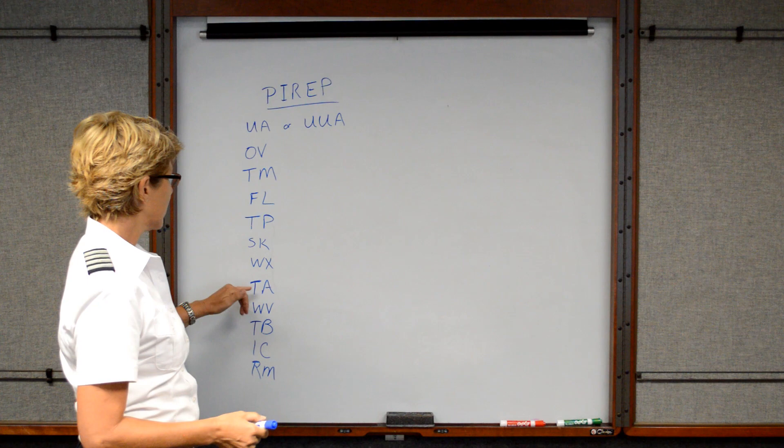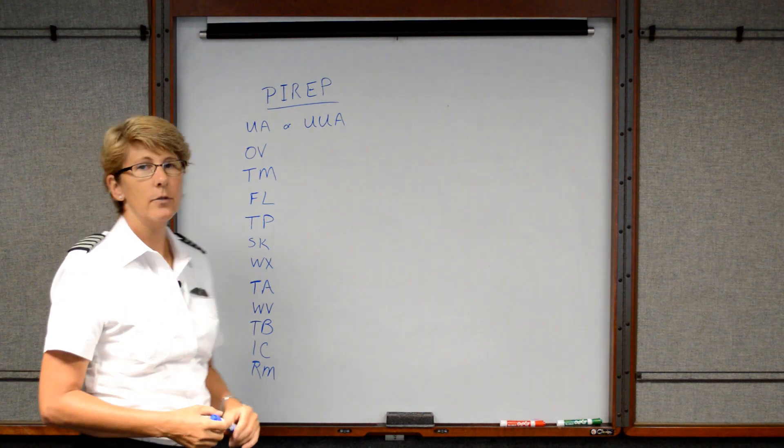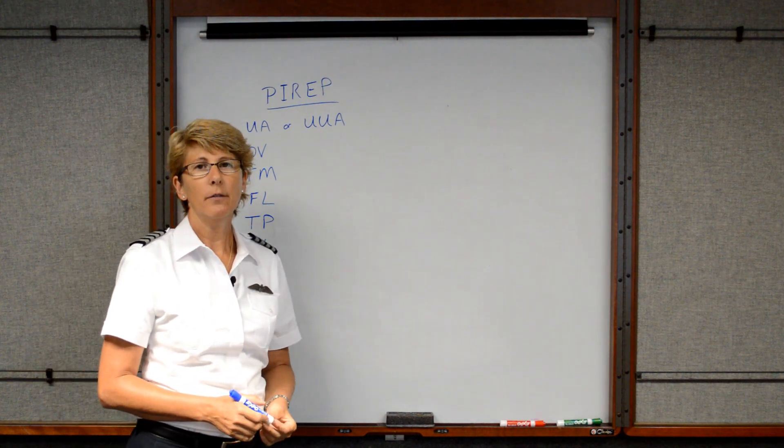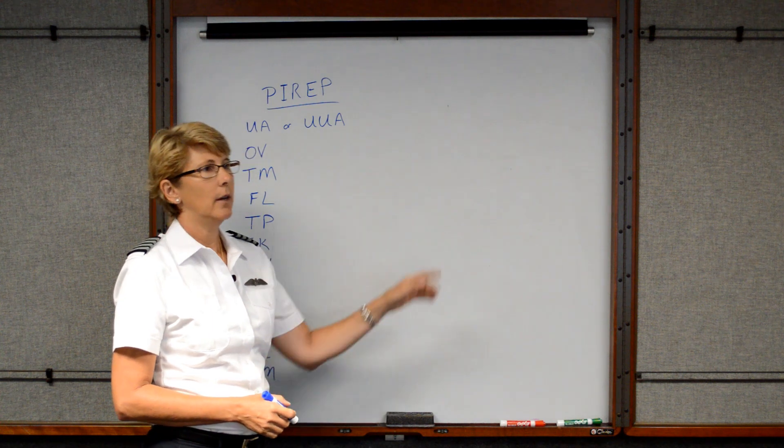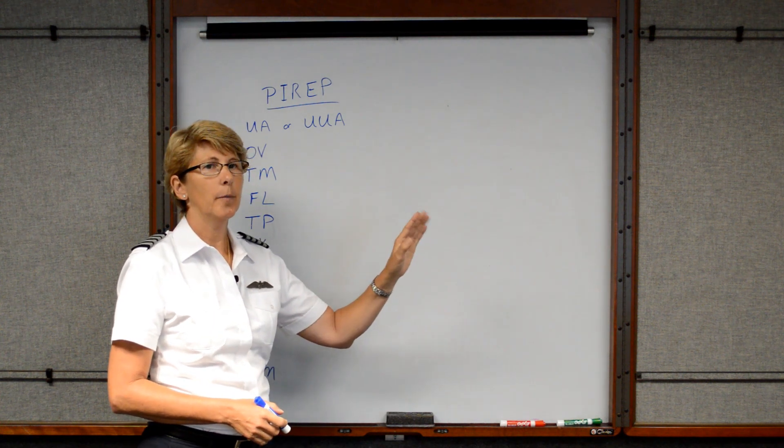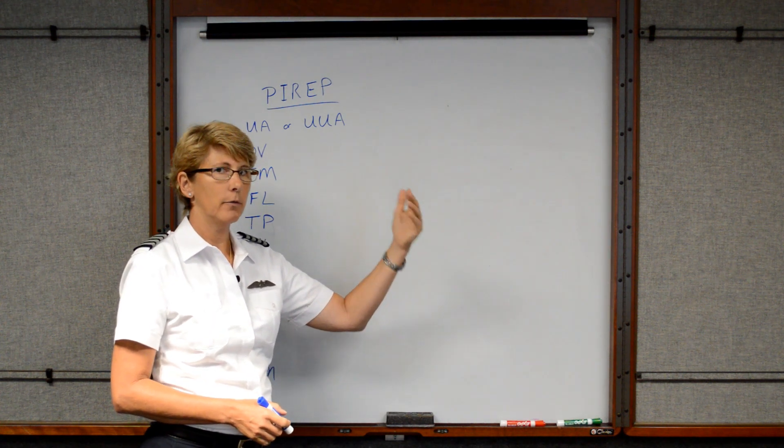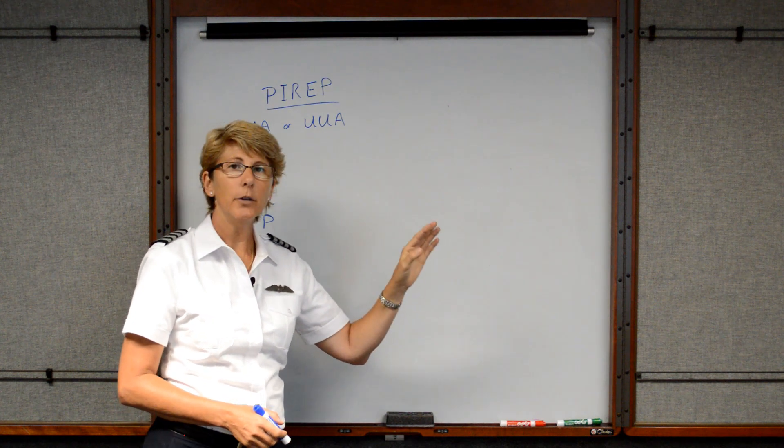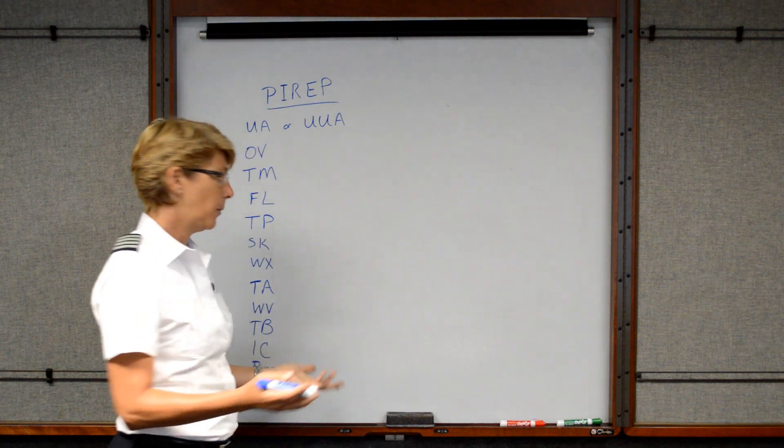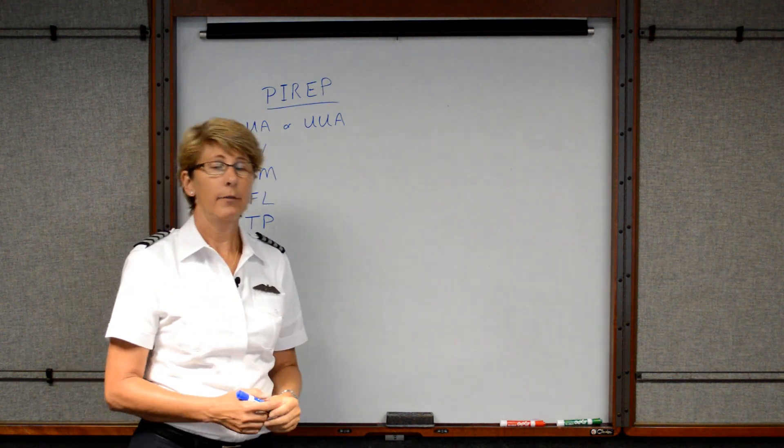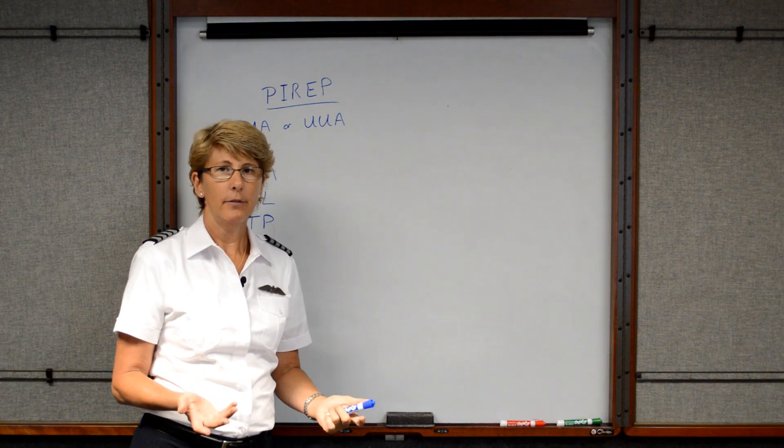Next is TA, which stands for the temperature, and they want you to give that in Celsius. So you should have a thermometer somewhere in your airplane. Maybe you have to push a button to switch it from Fahrenheit to Celsius, but they do want you to give it to them in Celsius. So maybe you report that the temperature at 5,500 is 11 degrees Celsius.